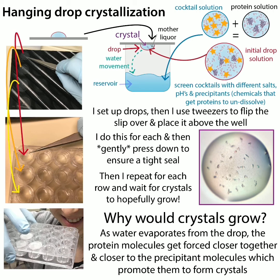The solution in the reservoir is more concentrated in terms of precipitants than the solution in the drop. The water comes out of the drop to effectively dilute the reservoir, since water concentration is higher in the drop. As this happens, you're concentrating the solution in a slow, controlled way by removing the water, and also effectively increasing the precipitant concentration — since precipitant takes water away from the protein — double dehydrating the protein in a controlled fashion that hopefully supports crystal growth.